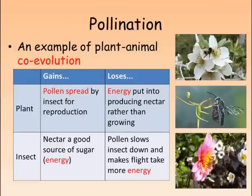The plant benefits from this relationship as it gets its pollen spread, but pays the price of producing nectar to attract the insects. The insects gain sugar and therefore energy from the nectar, but carrying the pollen slows the insect down and is a cost. There is therefore a benefit to any plant that can attract insects without having to produce nectar, or to an insect that can pick up the nectar without having to pick up the pollen.